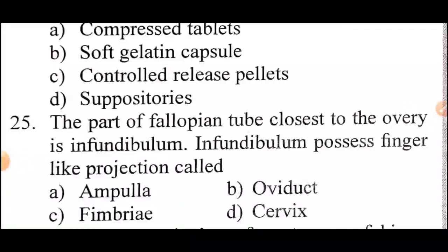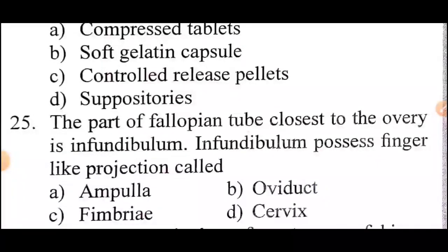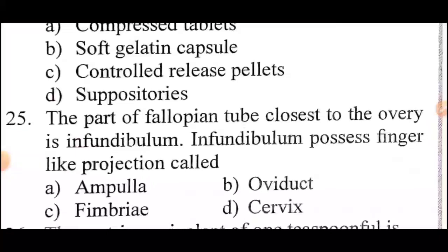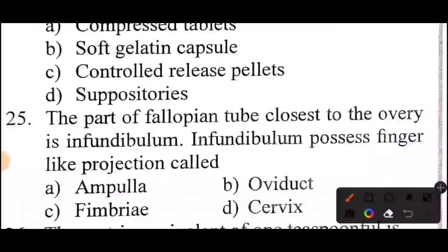Question 25: The part of the fallopian tube closest to the ovary is the infundibulum. The infundibulum possesses finger-like projections called —